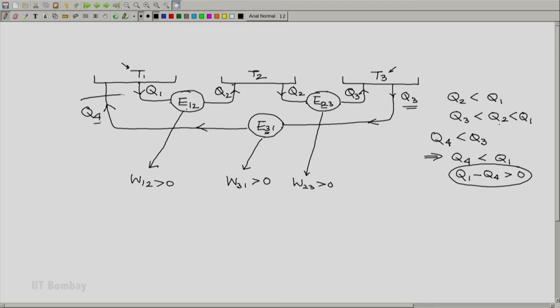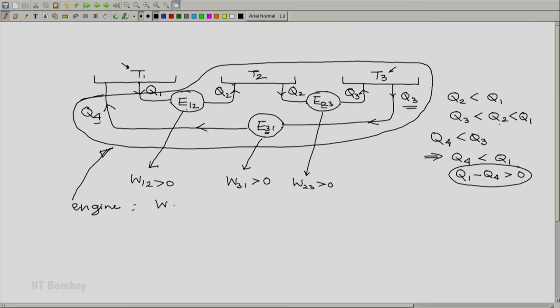Now, let us consider this system. T1 is out of it, but the reservoirs at T2, T3 and all the three engines are included in it. Now look at this. This is an engine because the work output is W12 plus W31 plus W23. Each of the components is greater than 0, so this is greater than 0. What is the heat input? The heat input is q1 minus q4. So heat supplied is q1 minus q4, which by first law will turn out to be equal to W. And only one reservoir, T1.